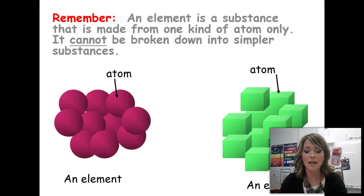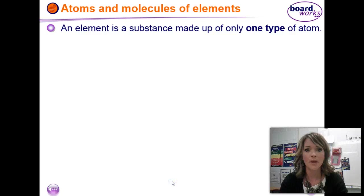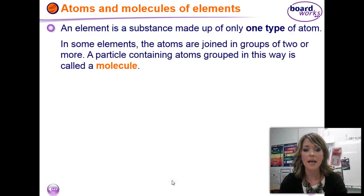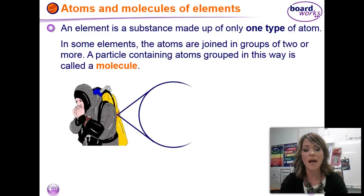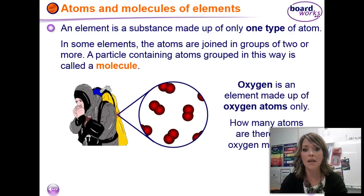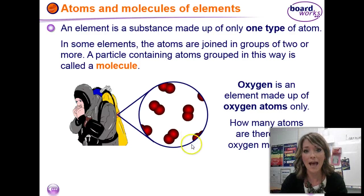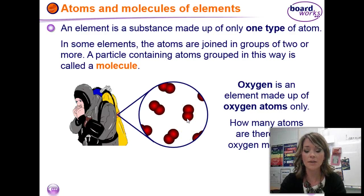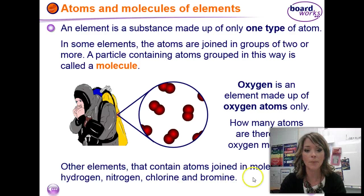Here's a drawing to represent an element — this element has one type of atom, and this element is made up of all of a different type of atom. An element has one kind of atom. If there are two atoms joined together, then we have what's called a molecule. Some elements, like oxygen, actually come in pairs — they come in molecules. If there's more than one atom hooked together, that's called a molecule. Here you can see there are two atoms in a molecule of oxygen. They're both the same, so it's still an element. Here are some other elements that also join into molecules — they're not single atoms, like helium.